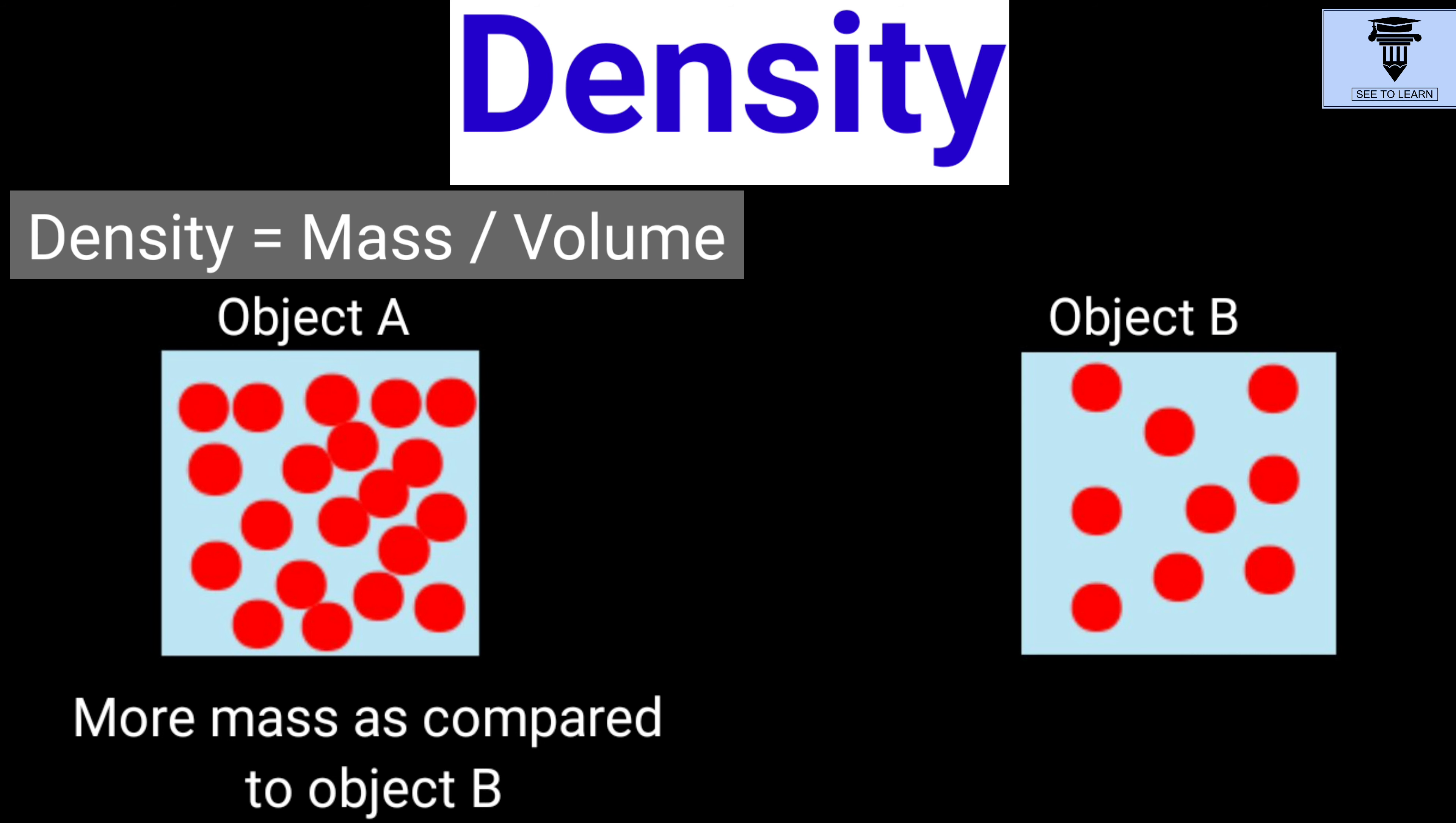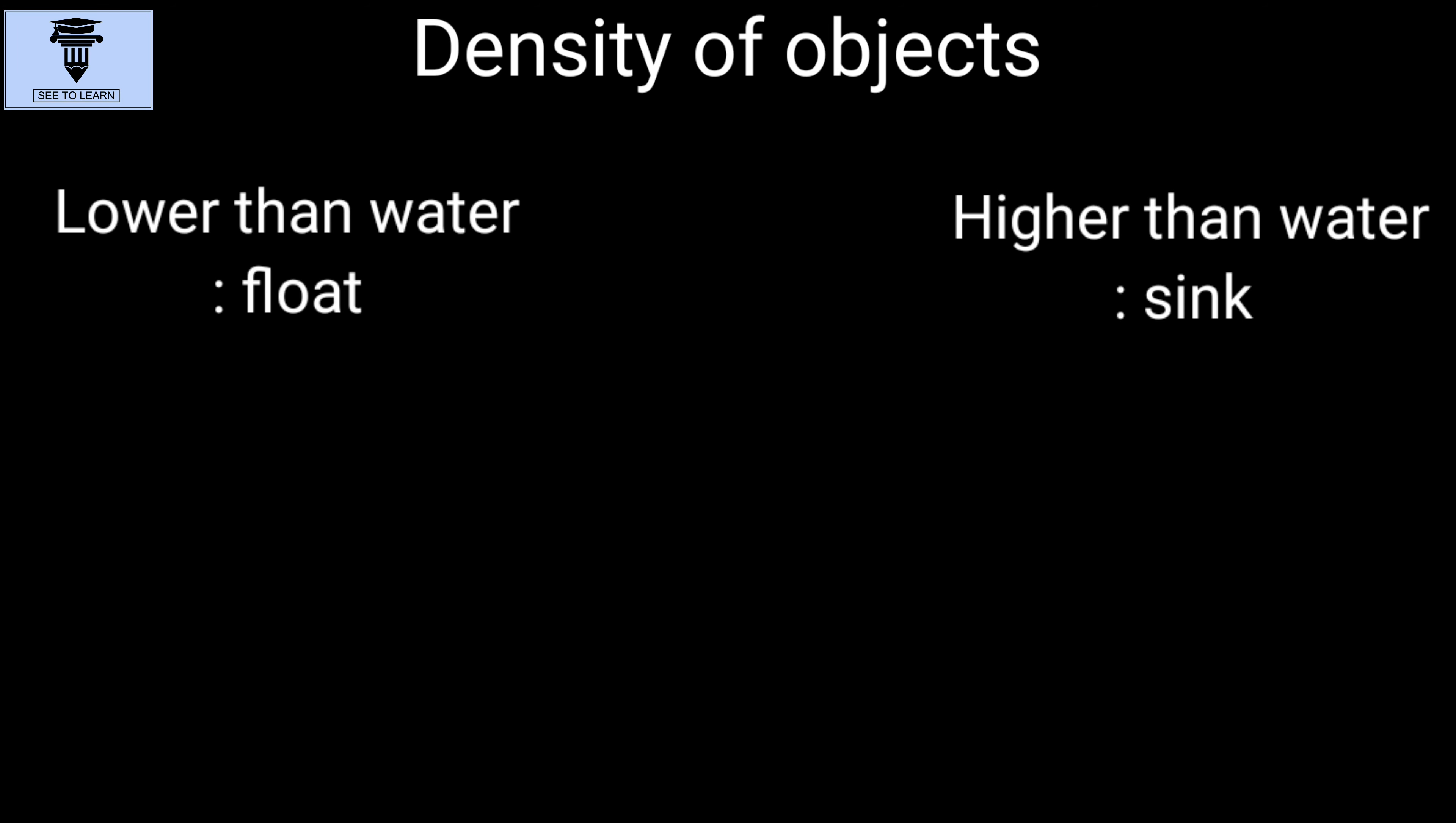The objects having density lower than that of water float, while those with density higher than water sink. These fruits have density less than water so they float, while chiku and lemon, being denser than water, sink in it.